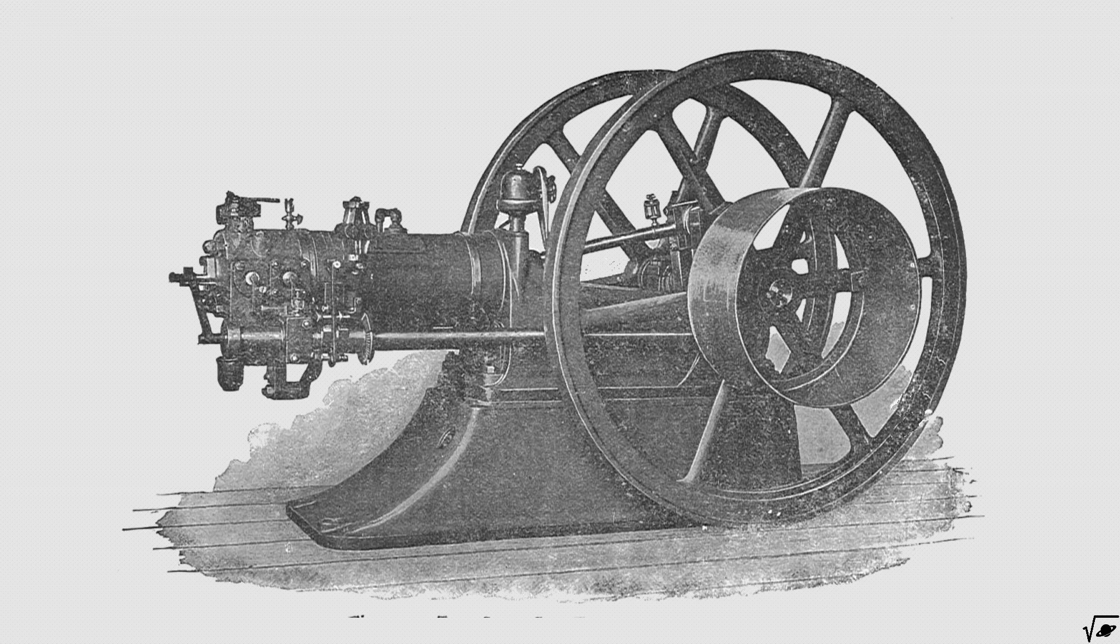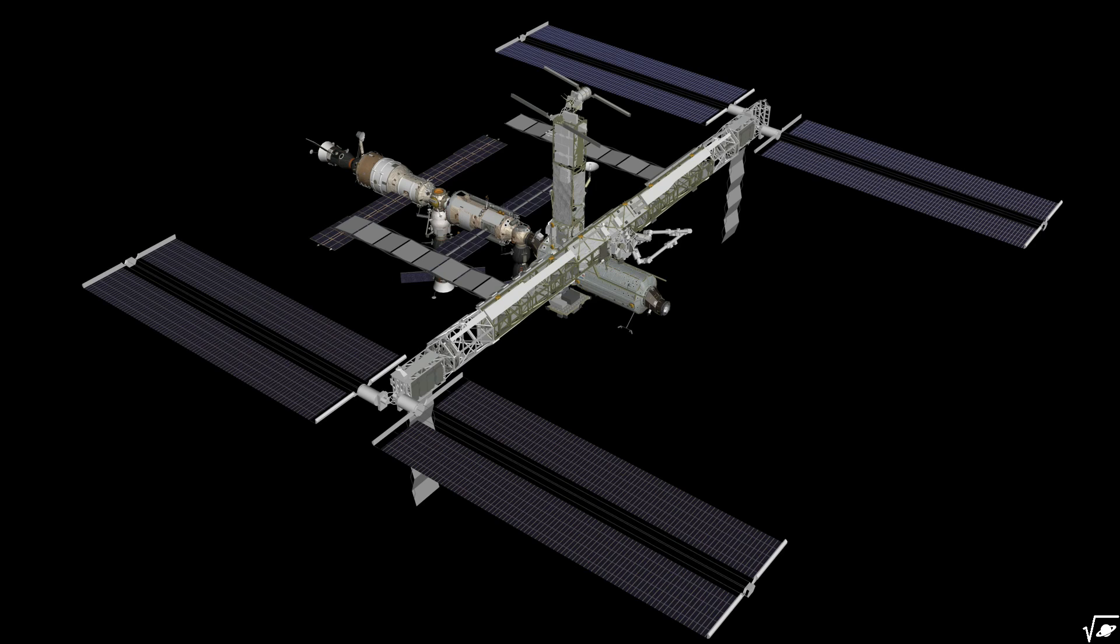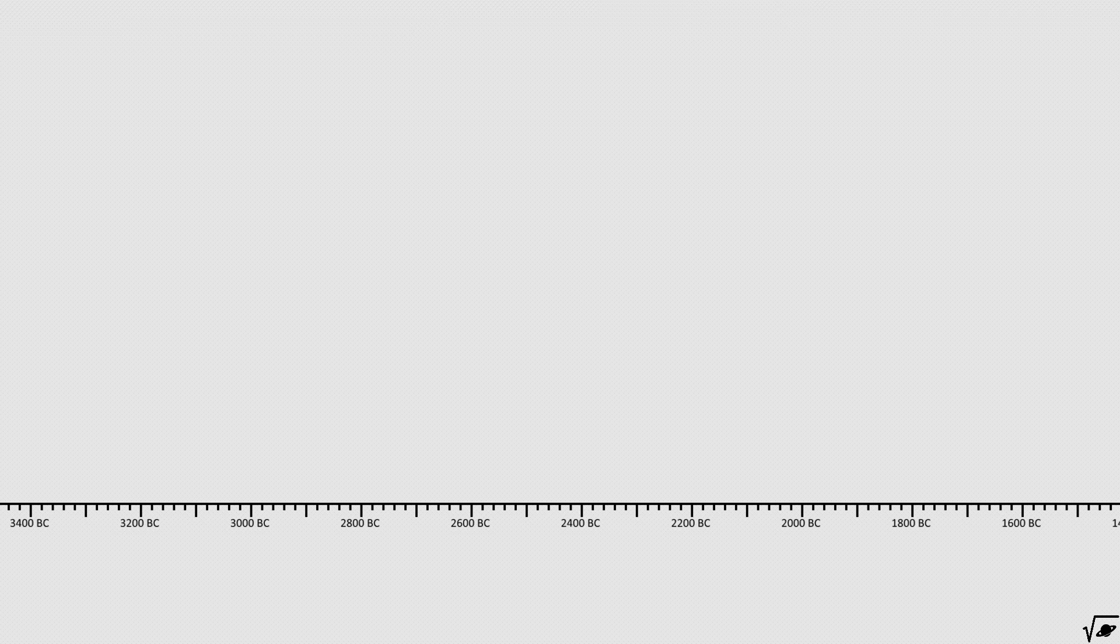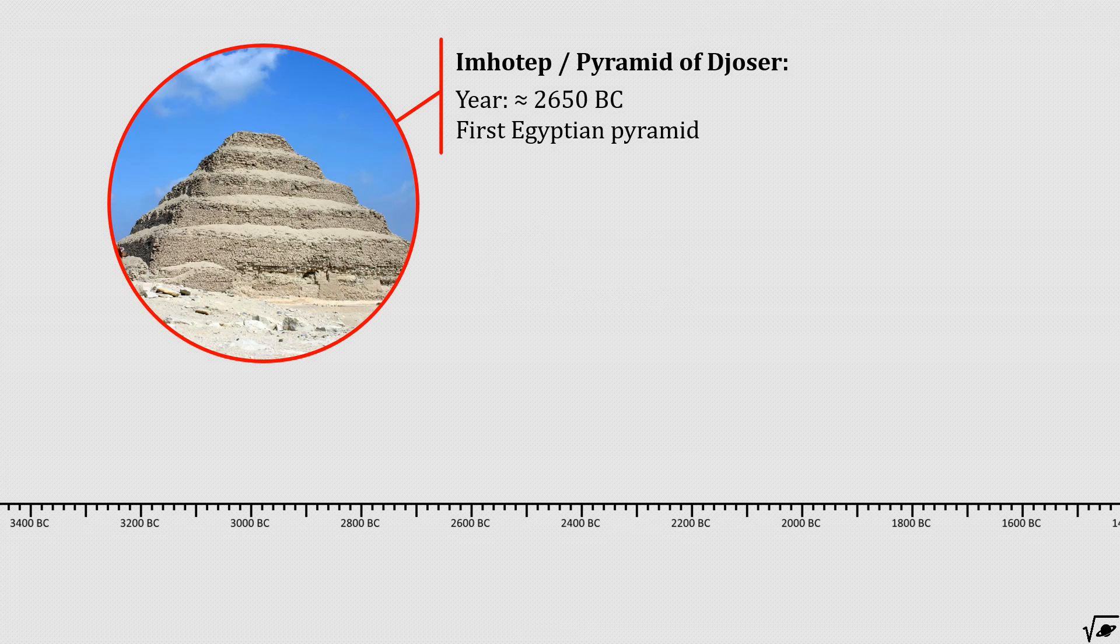Thousands of years of engineering and now we can do this. How did we come this far? Our journey starts with Imhotep, world's first known engineer famous for designing the Pyramid of Djoser.